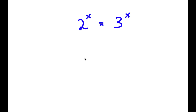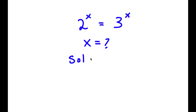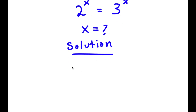Alright, so in this problem I have 2 to the power of x is equal to 3 to the power of x. I obviously want to find the value of x here. For my solution, I'm going to start by writing 2 to the power of x is equal to 3 to the power of x.